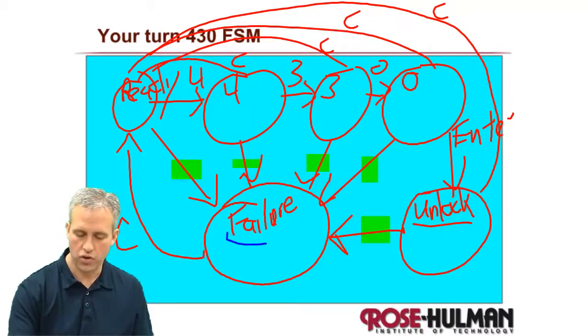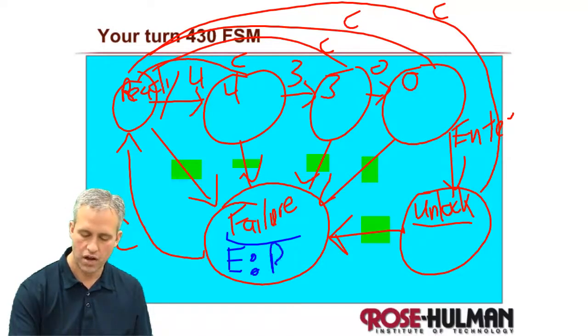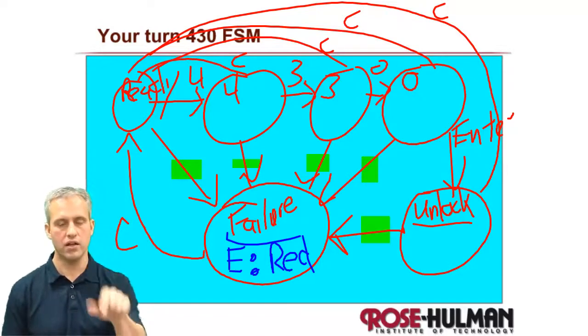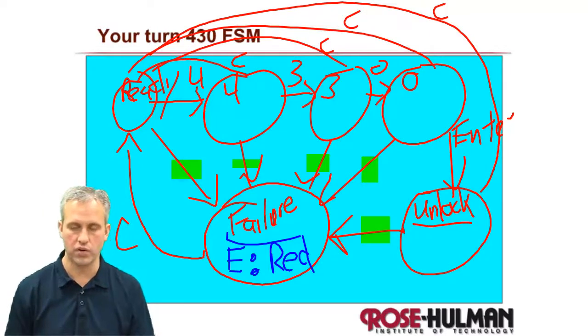As far as the outputs go, there is a Mealy machine output in failure to where if you press enter, it'll show you a red. So it'll only show you a red when you press enter.